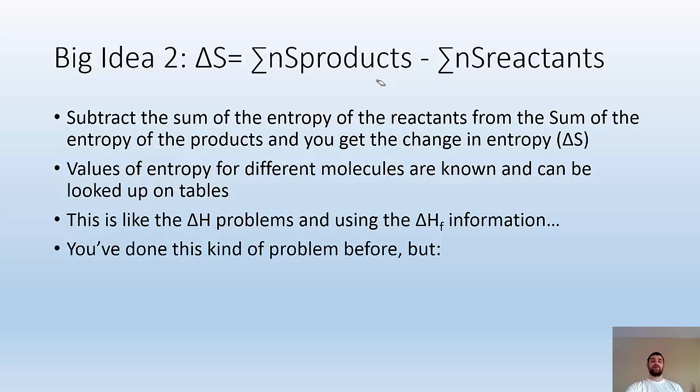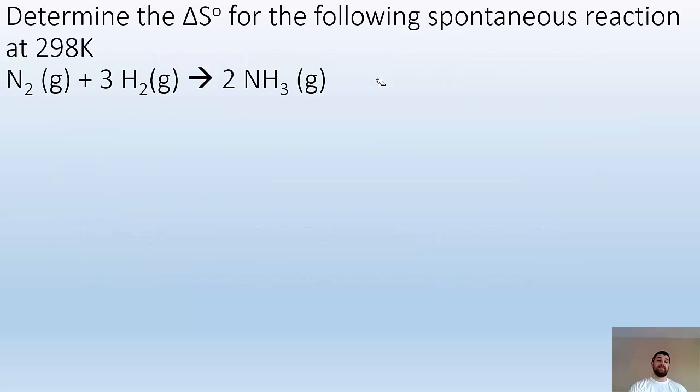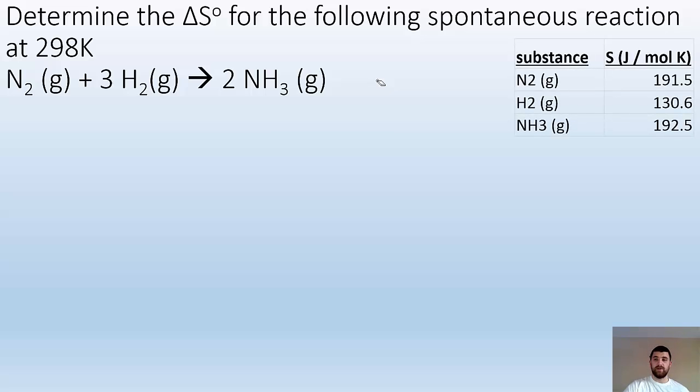You've done this before, but know that molar entropies of elements at 298K are not zero—you have to look them up. Example problem: Determine ΔS° for the following spontaneous reaction at 298K: N2(g) + 3H2(g) → 2NH3(g). First, I look up these entropies, paying attention to the phase, because H2O liquid and H2O gas have different values. The entropies are in joules per mole Kelvin.